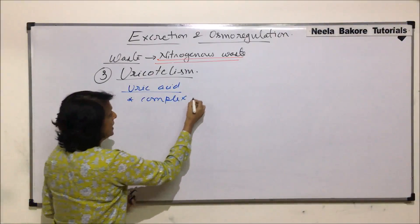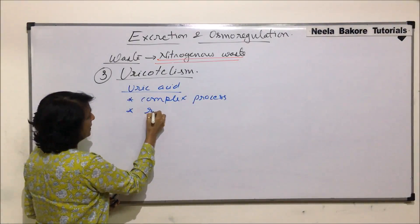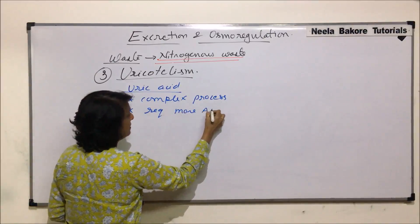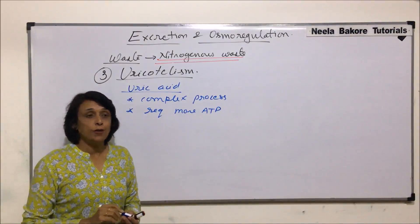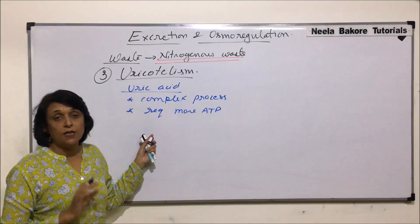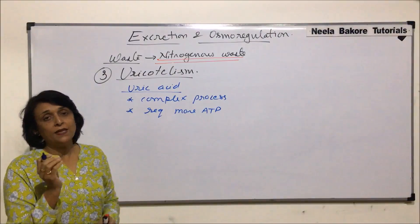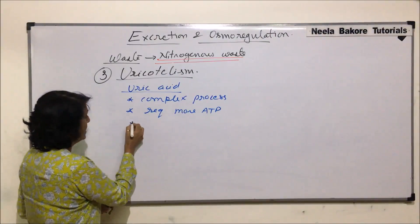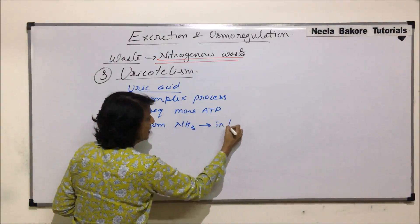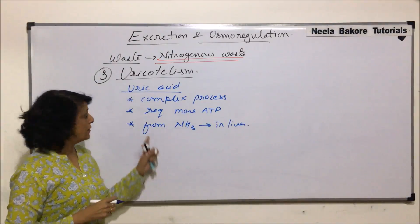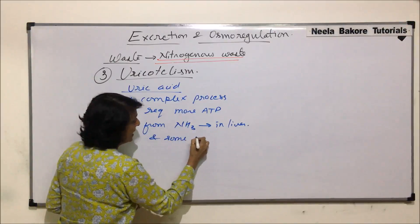It is considered a complex process and requires more ATP as compared to ammonia getting converted into urea. Uric acid production takes place from ammonia in the liver — maximum production of uric acid from ammonia takes place in the liver — and some uric acid is also produced in the kidney.